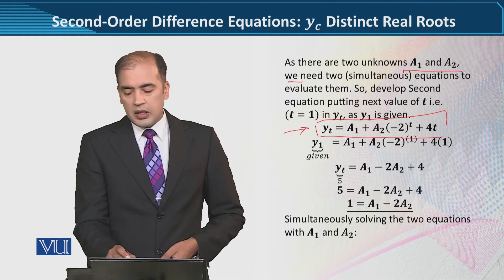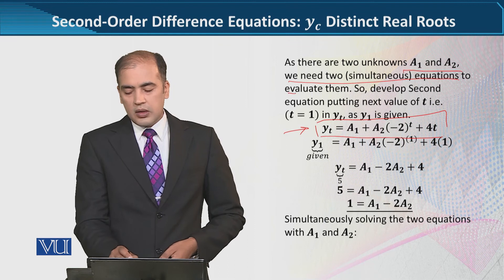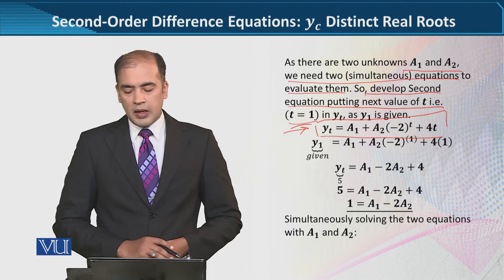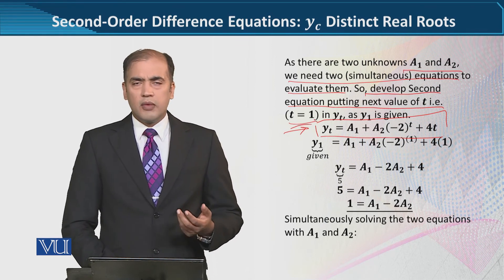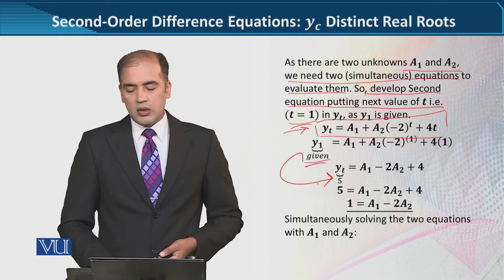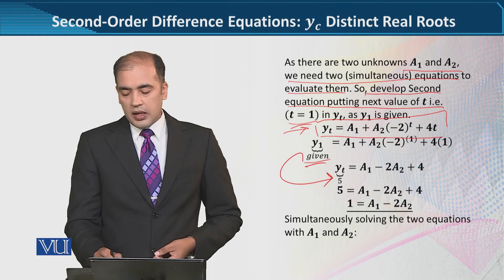Now we can see that we need two simultaneous equations to evaluate them. So develop the second equation putting the next value of T, that is T equals 1. So we can see that that is equal to 5.